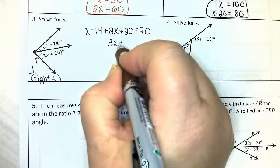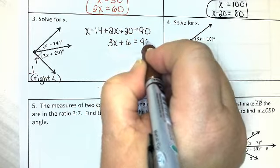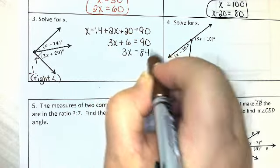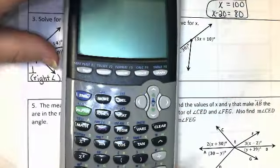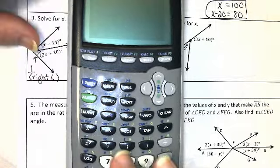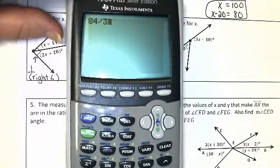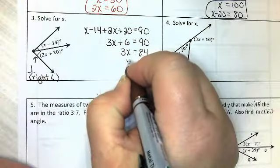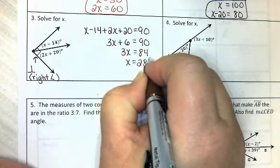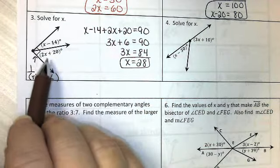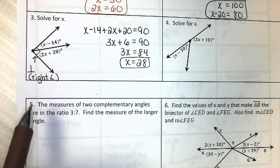I get 3x plus 6 equals 90. Subtract the 6 from both sides. And I'm going to do 84 divided by 3. 28. x equals 28. And that's all we had to do. They didn't ask us to go back and find the measures of the angles. Of course we could, just to double check and make sure it really worked.